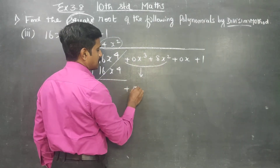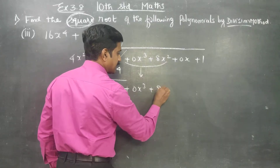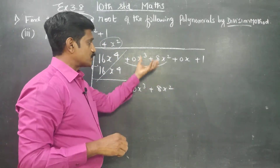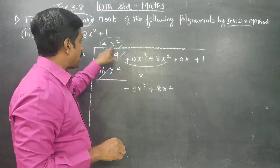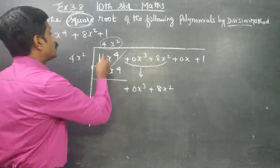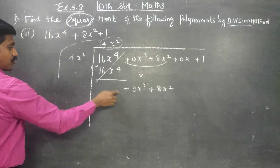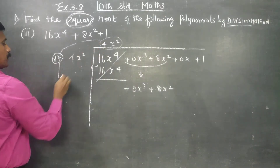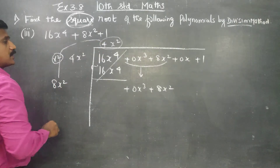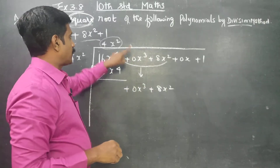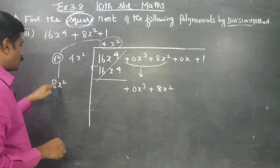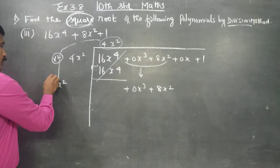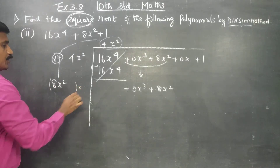Bring down 0x cube plus 8x square. 1x square times 2 gives 2x square as the next term. Place it in the bracket for multiplication.